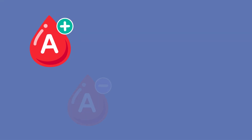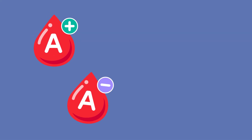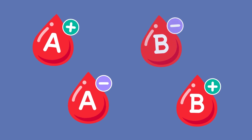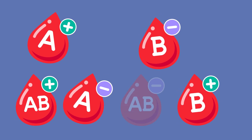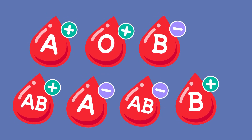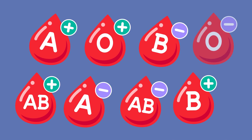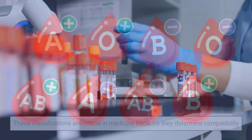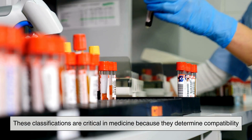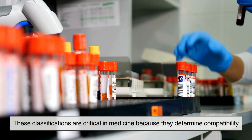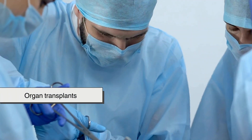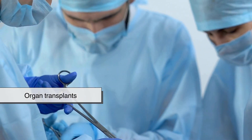Those eight types are: A positive, A negative, B positive, B negative, AB positive, AB negative, O positive, and O negative. These classifications are critical in medicine because they determine compatibility for blood transfusions and organ transplants.